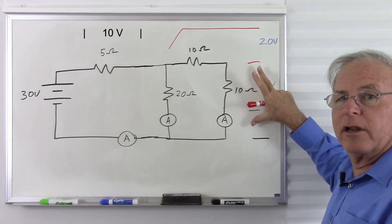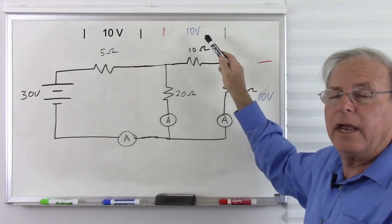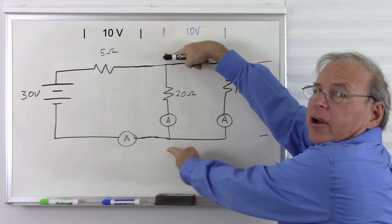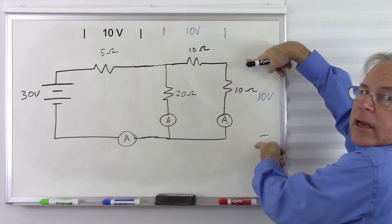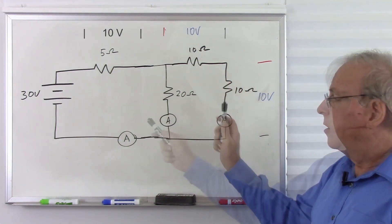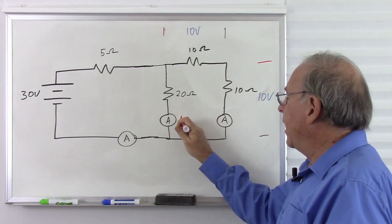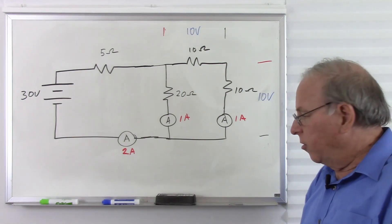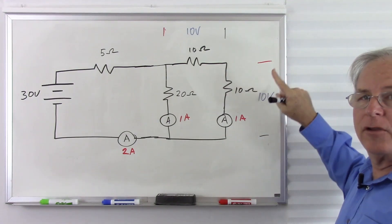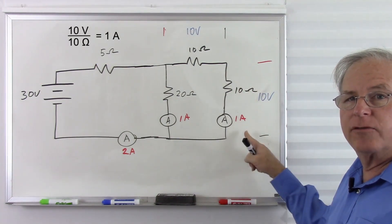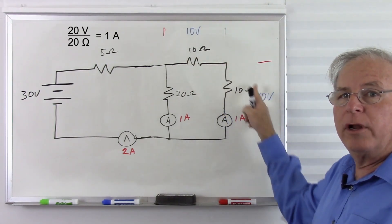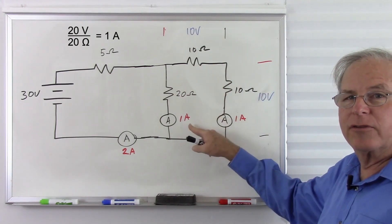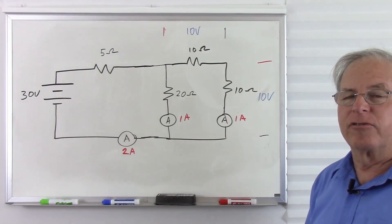The circuit breaks down: we start with 30 volts, lose 10 volts, leaving 20 volts. Then we lose another 10 volts, leaving only 10 volts across the last section. Let's verify: 10 ohms with 10 volts gives 1 amp. Taking both series resistors together, 20 ohms and 20 volts also gives 1 amp. And 20 volts across 20 ohms gives 1 amp. One amp plus 1 amp gives 2 amps — the circuit still works as expected.